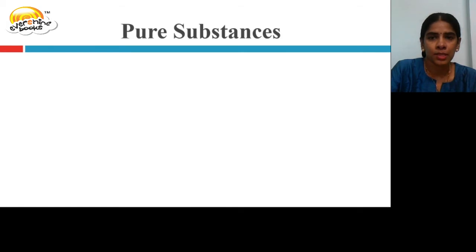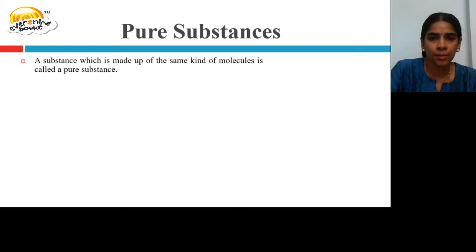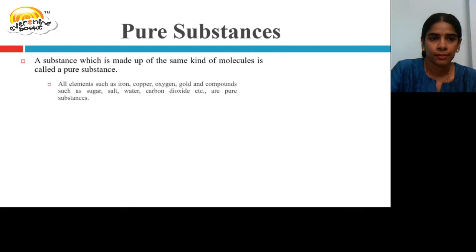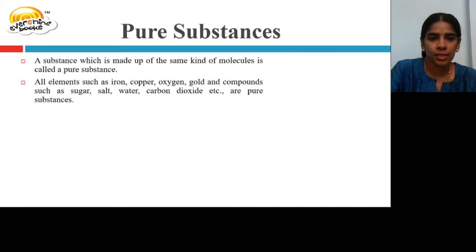Pure Substances. A substance which is made up of the same kind of molecules is called a pure substance. All elements such as iron, copper, oxygen, gold and compounds such as sugar, salt, water, carbon dioxide, etc., are pure substances.